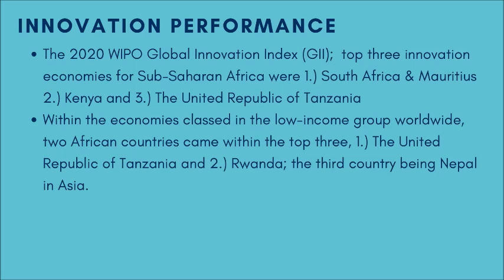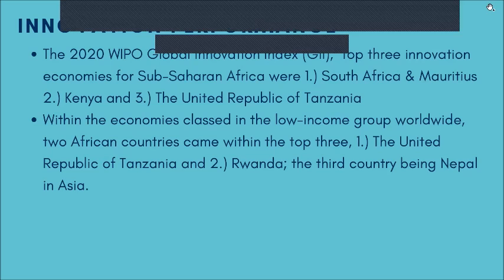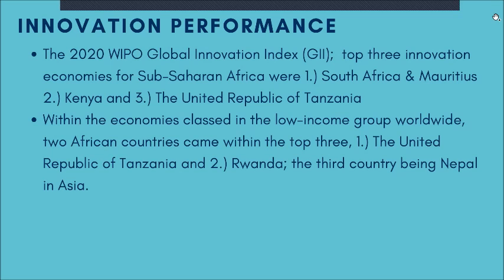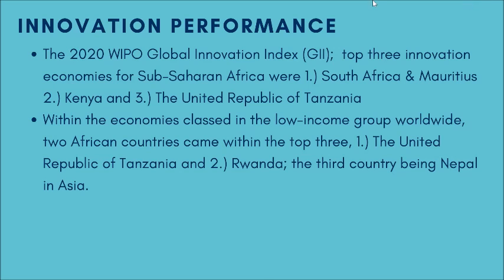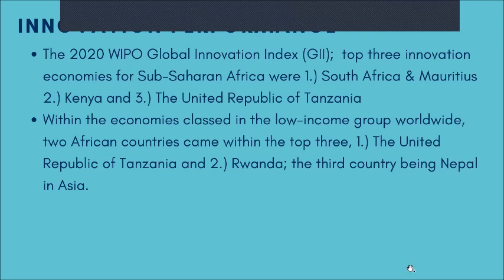Looking at the WIPO Global Innovation Report from 2020, the top performing economies in sub-Saharan Africa were South Africa and Mauritius, then Kenya, then the Republic of Tanzania. In the low income group, Tanzania and Rwanda came first and second. These are developing and LDC nations performing within their own category.